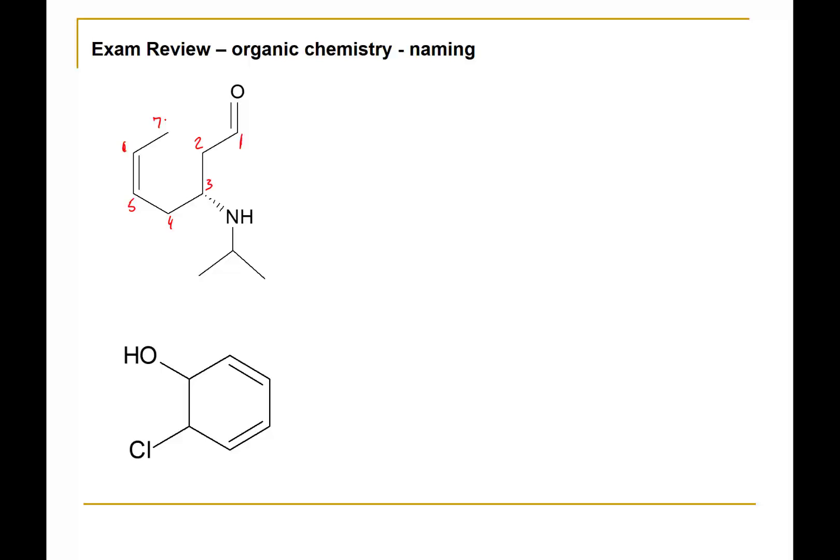Now it is worth noting that we do have two functional groups because we also have the amine or the amino functional group, but the amine is less important so it will be considered as a substituent in this particular structure. An aldehyde is always at the end of an organic molecule therefore we do not need to say that it's on carbon number one, but we'll need to use the suffix -al to indicate that it's present.